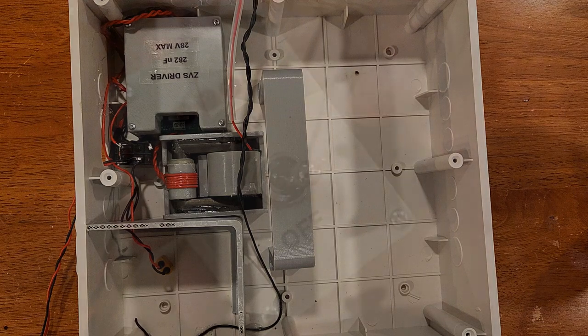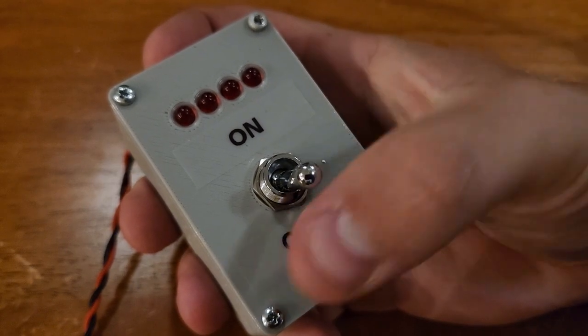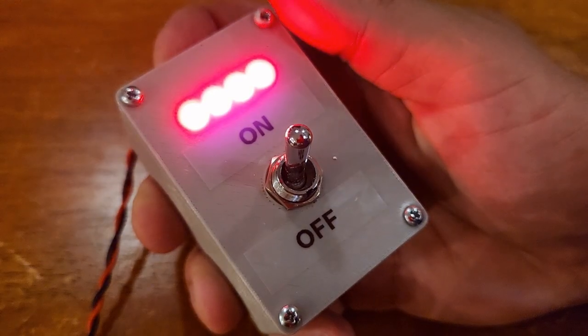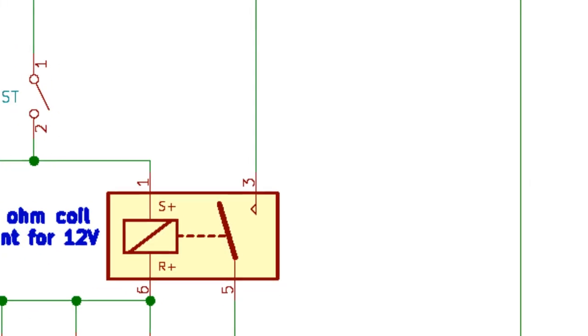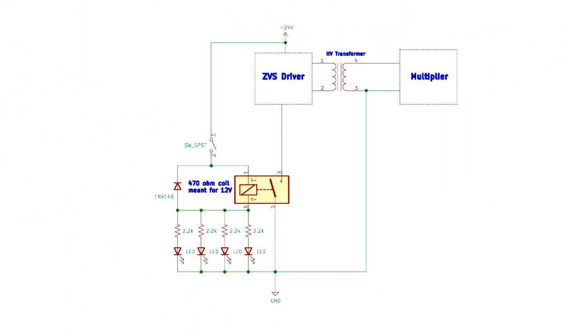The whole circuit is energized by turning on a relay, which is controlled by a switch box on several feet of wire so that I don't have to be right next to the tower when it's energized with half a million volts. The coil is meant for 12 volts, but having some LEDs and resistors in series with the relay coil to serve as status lights, I can safely operate it with 24 volts.